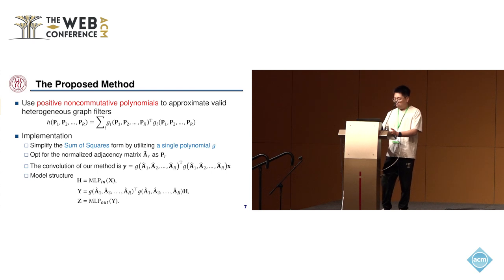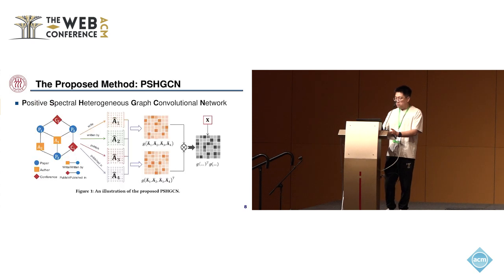Finally, we obtained the detailed convolution and model structure for our method. This figure shows the graph convolution of our proposed positive spectral heterogeneous graph convolution network, which is abbreviated as PSHGN.